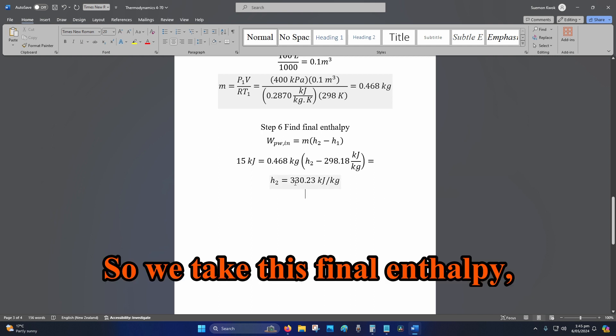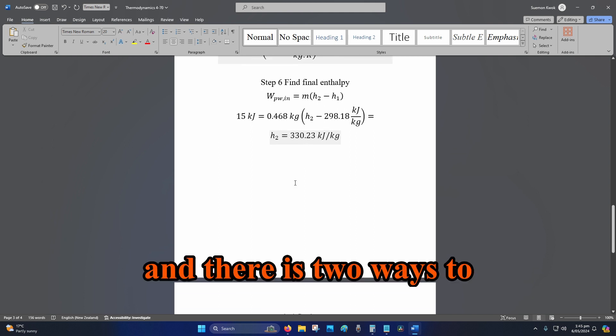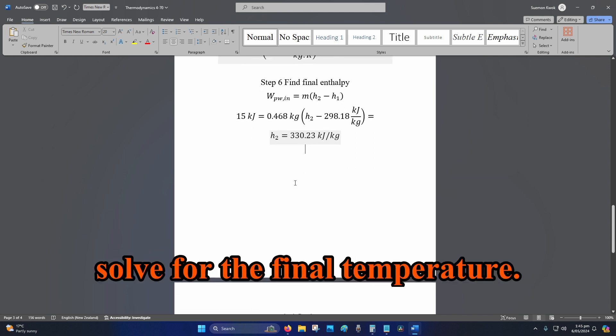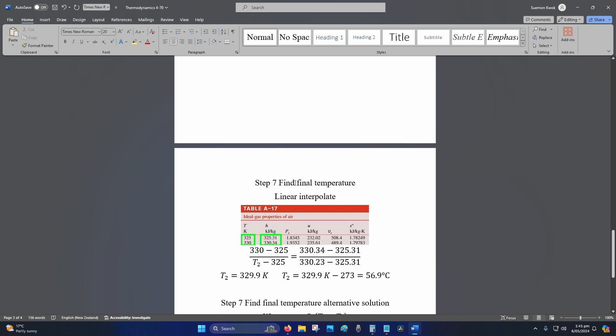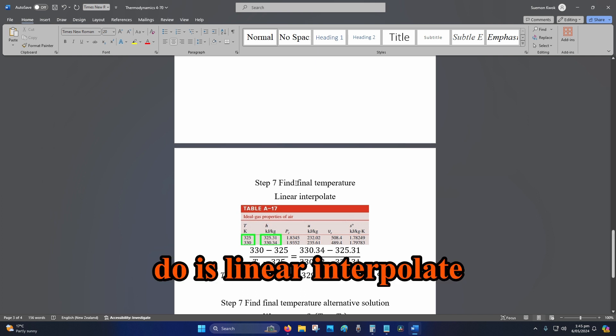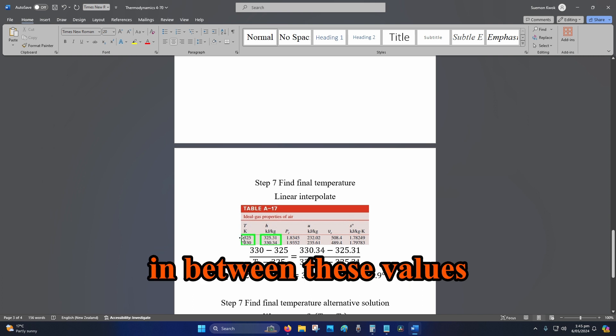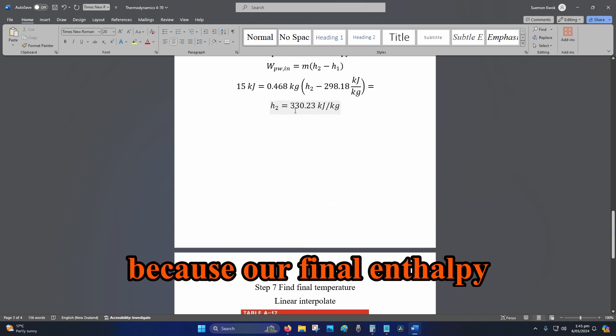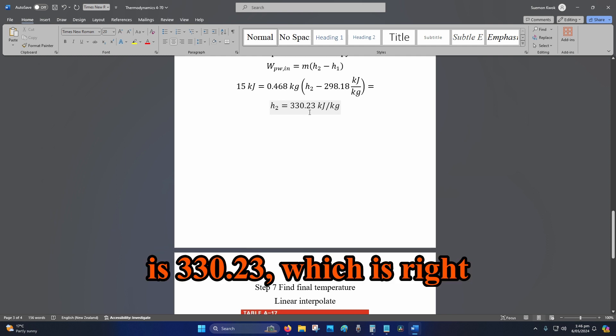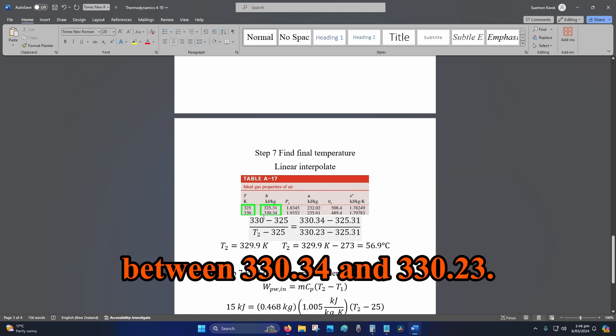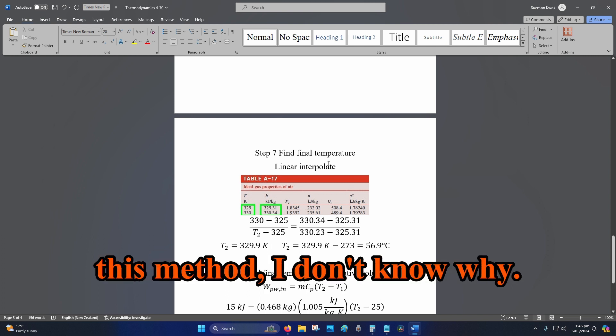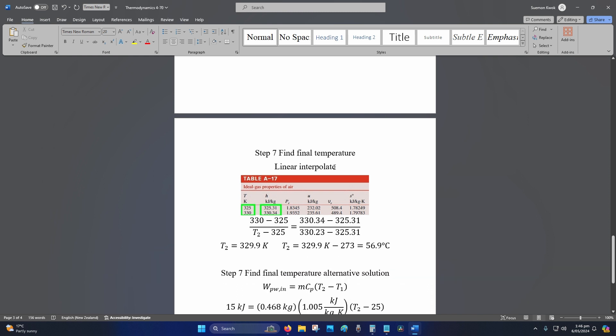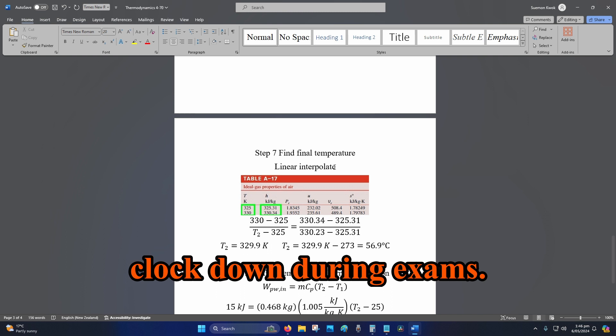So we take this final enthalpy and there are two ways to solve for the final temperature. So the first way, students hate it, it's the linear interpolation way. And what you need to do is linear interpolate in between these values because our final enthalpy is 330.23, which is right between 330.34 and 325.31. Lecturers and professors love this method, I don't know why. It stresses students out and it really runs the clock down during exams. Maybe that's probably why.